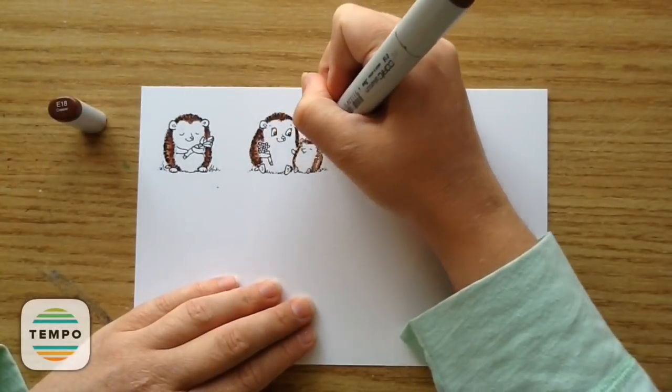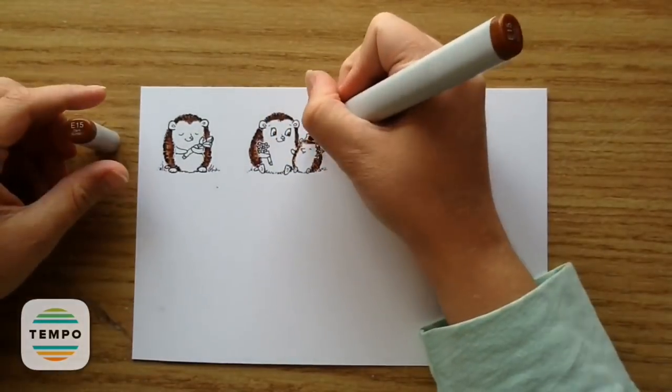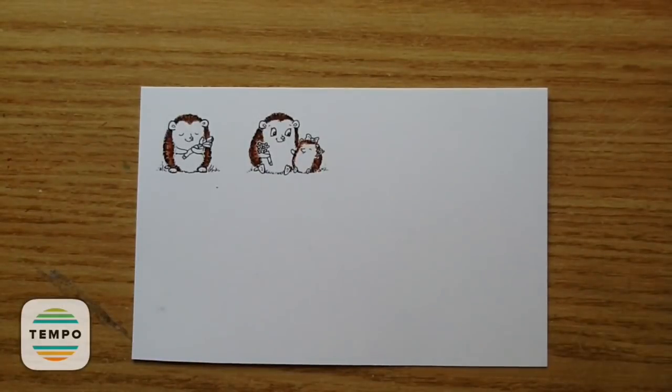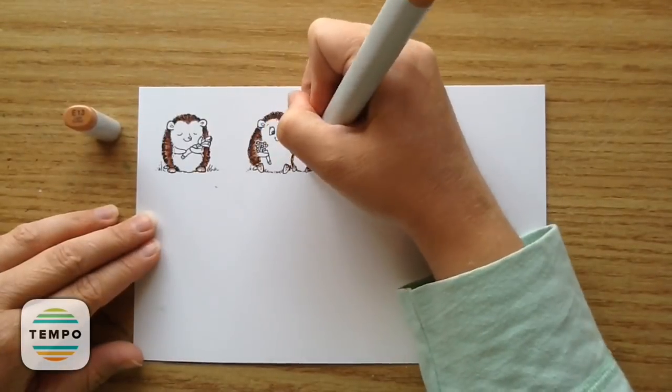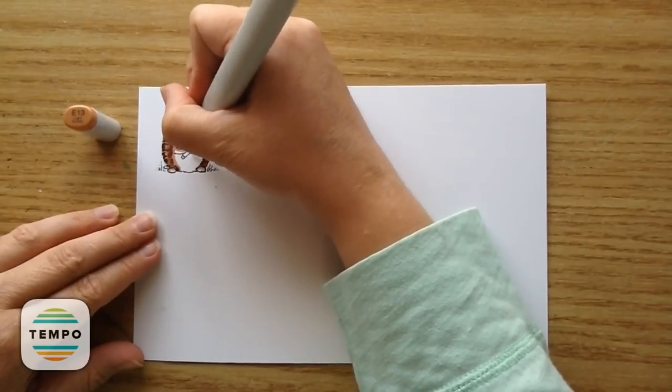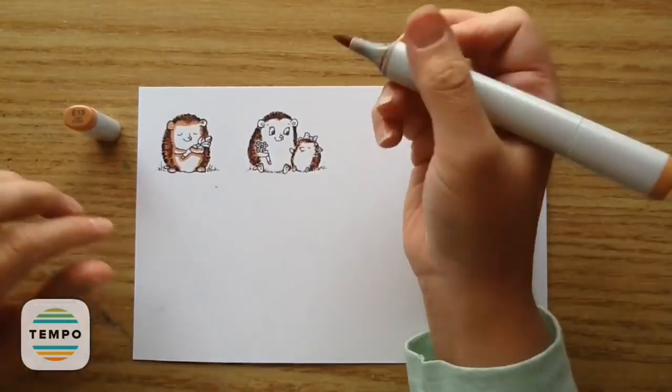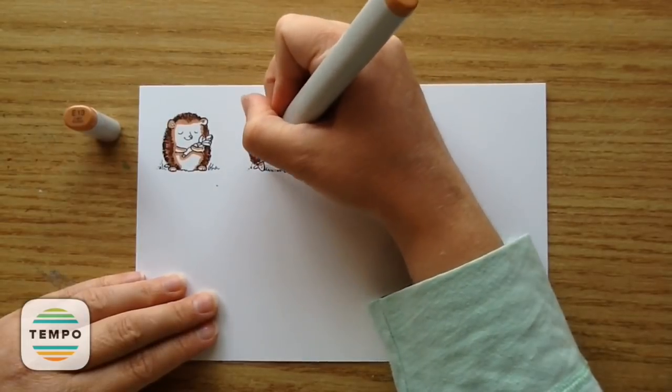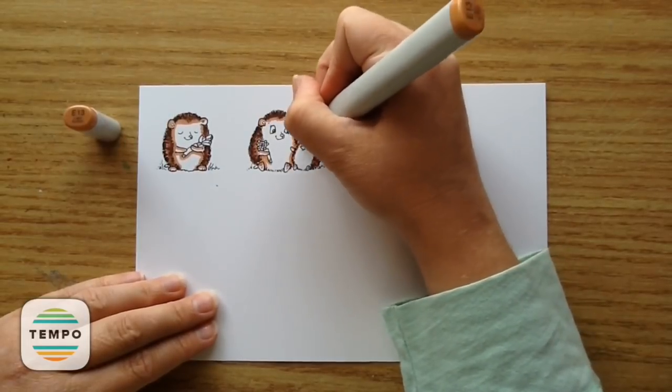And then I'm going in with the E18 and 15 on the little baby hedgehog. She is so cute with her little bow. And then I'm using E13 for the inside of the hedgehog and just going around where all the darker bits would be. So cute.